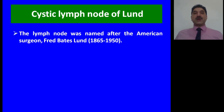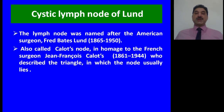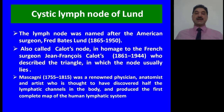Historical background of the cystic lymph node of Lund: the lymph node was first named after American surgeon Fred Bates Lund. It is also called the Calot's node, in homage to the French surgeon Jean-François Calot, who described the triangle in which the node usually lies. It is also called the Mascagni's node.